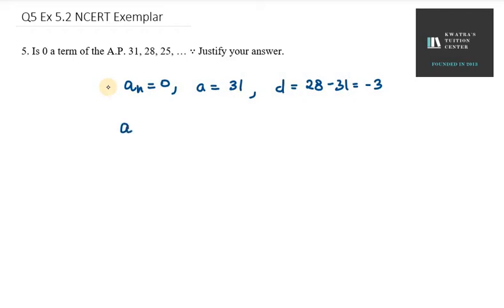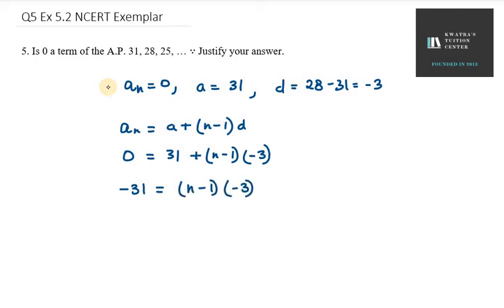Let's use AN value. AN equals A plus N minus 1 D. AN will be replaced by 0, A will be replaced by 31 plus N minus 1 D, D is minus 3. Now you need to take 31 to the left hand side, it will be minus 31, then you have N minus 1 minus 3.